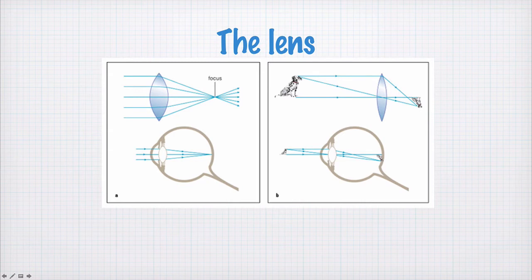Light from the ear of the dog may also pass straight through the center of the lens. Now lenses with spherical surfaces have a property that light that passes through the center of the lens does not change direction. So this light goes through the center of the lens and arrives at this point here.